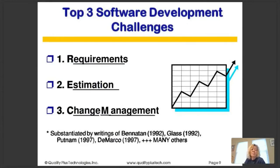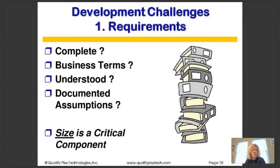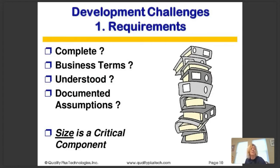When we look at software development, there are three software development challenges that occur and arise no matter what writings you look at. The first is requirements. The second is estimation. The third is managing change. Under requirements, the challenge is whether our requirements — our use cases, user stories, or whatever we're developing software from — are complete, expressed in business terms, and understood by the entire team: the product owner, the scrum master, the developers. Are we all understanding the same thing?